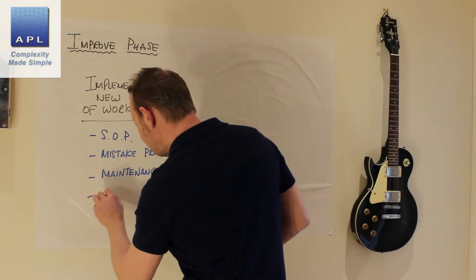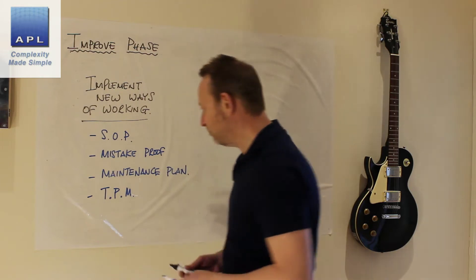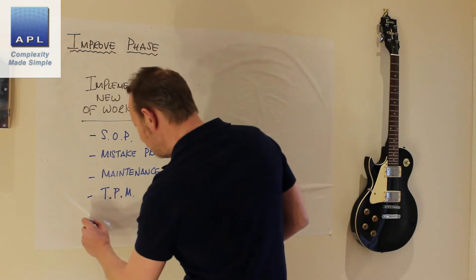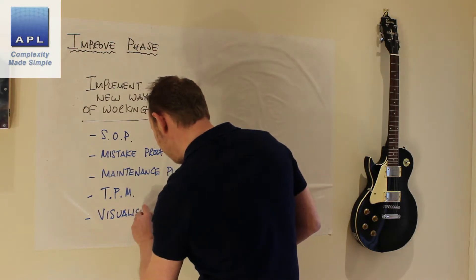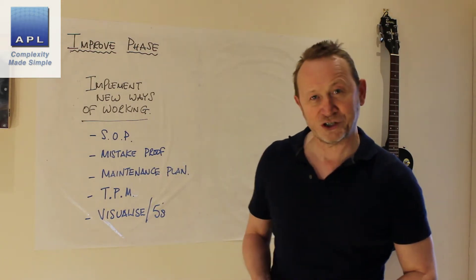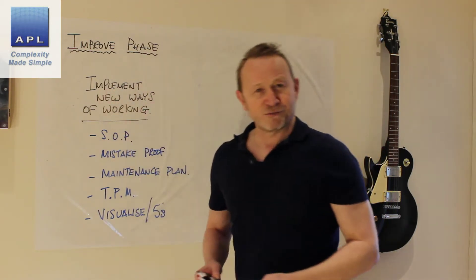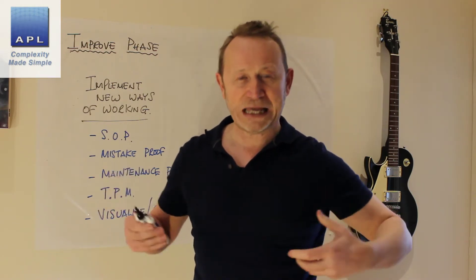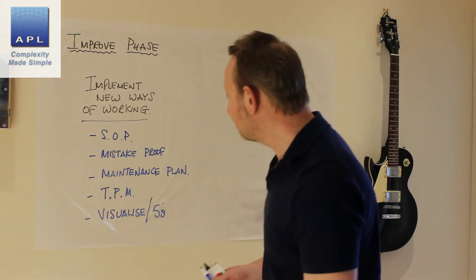If it's more routine, you might end up putting it in the TPM system. You might also decide to visualize the new way of working using 5S workplace organization. So you can see what all of these are — just ways of communicating. You've decided how to work and now you're doing the Improve phase, which is just implementing and communicating the new ways of working to the point of activity.